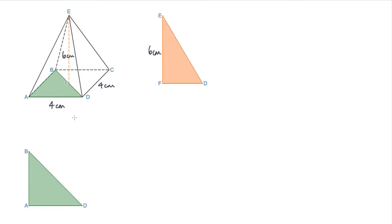We know that AD is 4 centimeters, and this length AB is also 4 centimeters because it's a square-based pyramid. So we're looking for BD. Using Pythagoras, BD squared equals 4 squared plus 4 squared, which is 16 plus 16, which is 32. Therefore BD is the square root of 32.